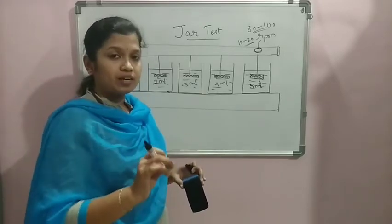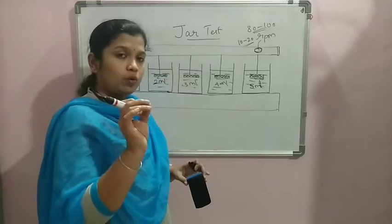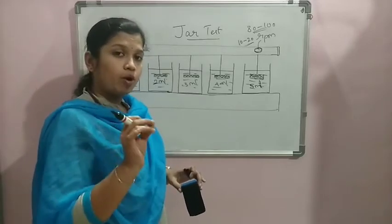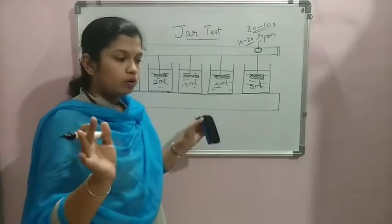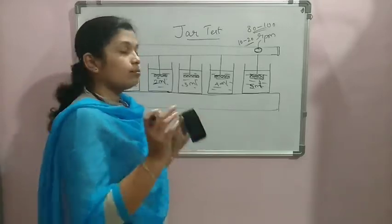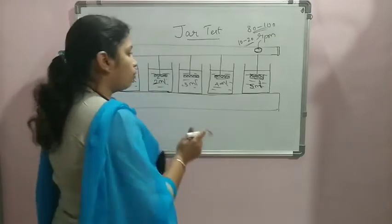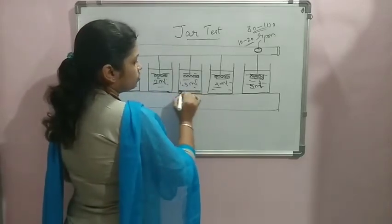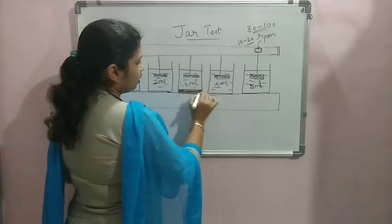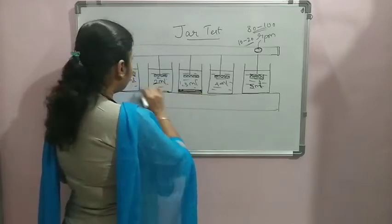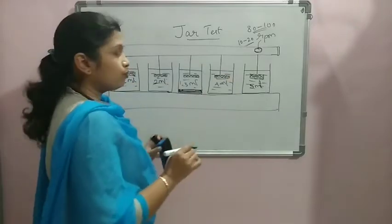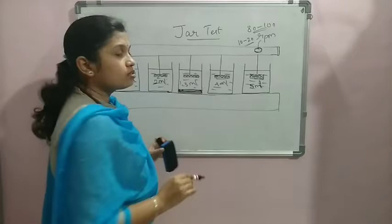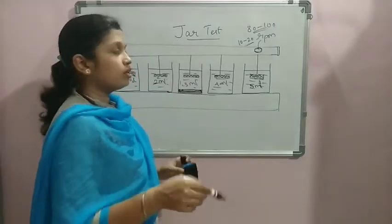Now the coagulant which has come in contact with all the particles, the fine particles present in water, has stickered around the fine particles. Now these particles upon slow mixing come close to each other and they stick together. Because of that, they come to the bottom and settle down after giving some sufficient time. We have added different dosage to each of the jar, so we will be checking visually which jar is having the lesser turbidity water.